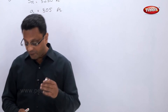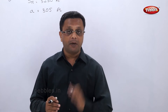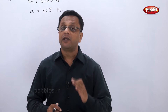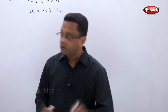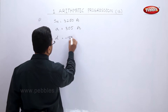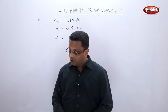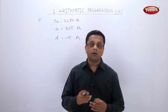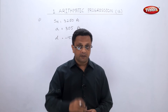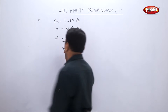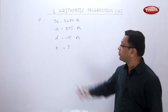He decreases the payment by 15 rupees per month. Since it is decreasing, the common difference d will be minus 15. The question asks how long will it take to clear his loan — meaning how many installments are to be paid. So we have to find out n, the number of installments.